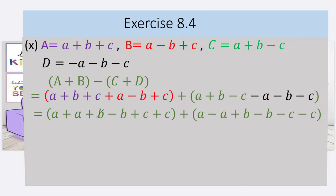We arrange the terms inside the brackets first. In the first bracket, B's signs are opposite so they cancel. In the second bracket, A's signs are opposite so they cancel, and B's signs are also opposite so they cancel too. In the first bracket, A plus A gives 2a, and C plus C gives 2c. In the second bracket, C's terms also have the same sign — both negative — so we add them, giving minus 2c.